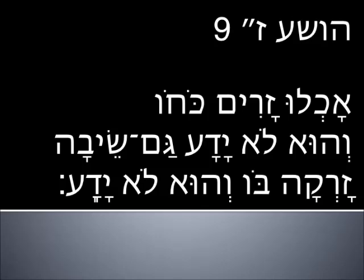Back in Hosea 7:9 — 'Seva zarqa bo' — gray hairs are sprinkled around him. He's getting old and going gray, but he hasn't noticed. His strength has been eaten up by foreigners and he's beginning to go gray. Things are not improving. Why doesn't he know it? Because he is arrogant and refuses to turn back to God. The kings won't plead for God. Anyone who comes to correct him gets chewed out — we're going our own way. This is Ephraim — he's lost. But maybe by chapter 14, he'll recuperate.